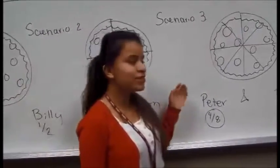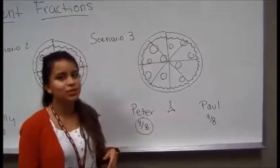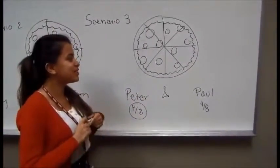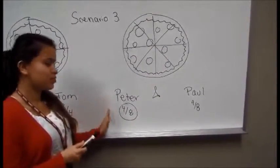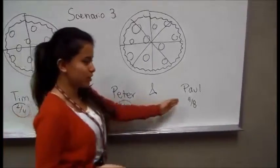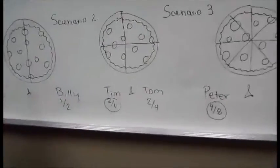In the third scenario, we have Peter and Paul. They also want to share equally, but they decide that they want to cut it into eight slices. So Peter gets four out of the eight, and Paul gets the other four. What pattern do we see here?